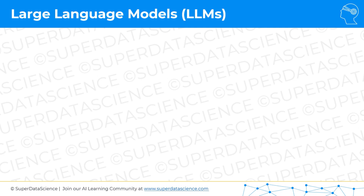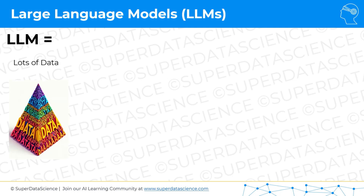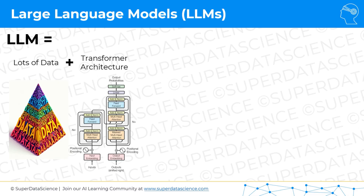A large language model consists of several elements. First of all, you need lots of data — lots and lots and lots of data to be more precise. Then you need a transformer architecture, which we will dissect and delve into very deeply and in detail. You'll learn all about it and you will be a master of this architecture by the end of this course.